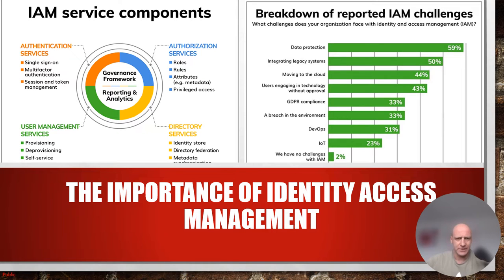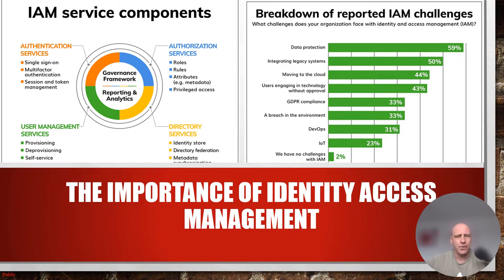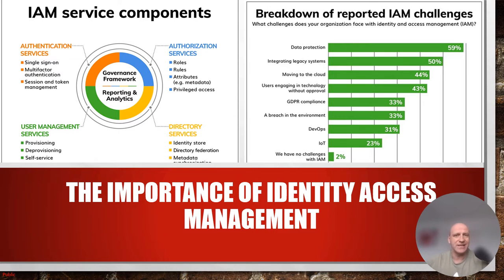Let's break down role-based access control versus attribute-based access control. Role-based access control provides access rights depending on the user's role in the organization — it's the most common and simplest to deploy. Attribute-based access control grants access rights using a combination of attributes together. ABAC is the most flexible but also the most complex. For example, ABAC would allow only users who are HR employees to access the HR payroll system, and only during business hours within the same time zone as the company.